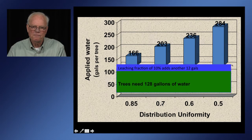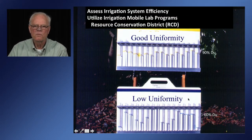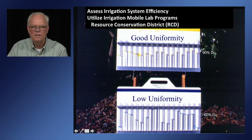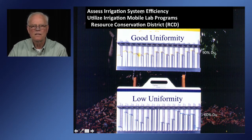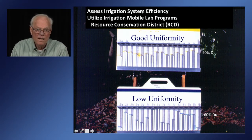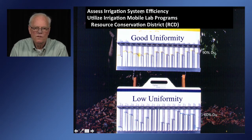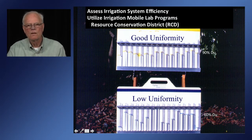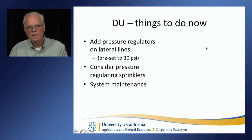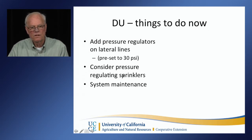Get the distribution uniformity up. Here's an example of good uniformity at 90% DU compared to 60% DU — actual captures from emitters in an orchard showing significant variability. You can assess irrigation system efficiency using the irrigation mobile lab program, often run by the resource conservation district, or through irrigation district evaluations. They'll make recommendations to improve pressure regulation on lateral lines, consider pressure-regulating sprinklers, and establish a regular program of system maintenance.